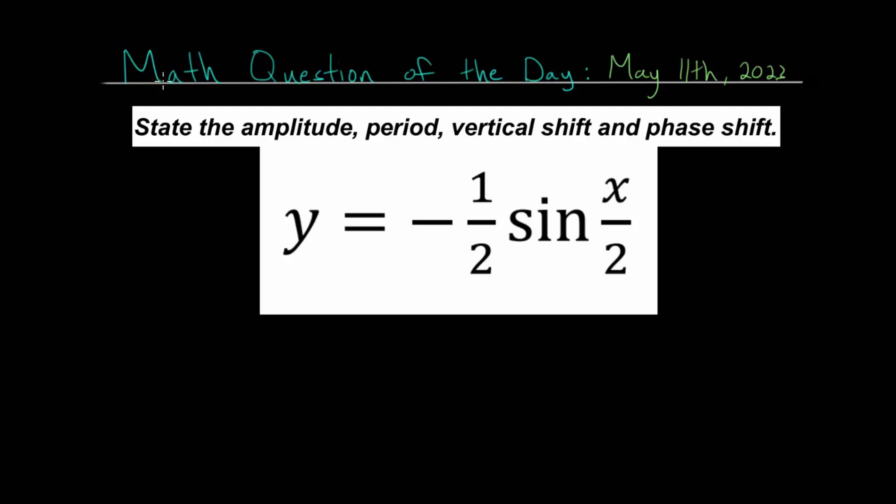In this video, I'd like to talk about the math question of the day for Thursday, May 11th, 2023. With this problem, we need to state the amplitude, period, the vertical shift, and the phase shift of this trigonometric function, y equals minus one-half sine of x over 2.